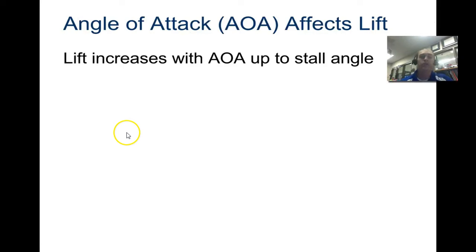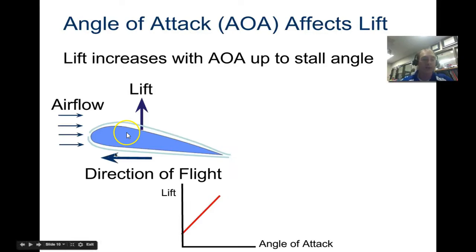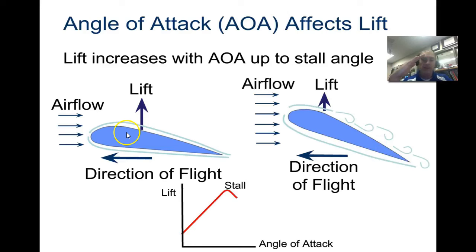Lift will increase with angle of attack up to a certain stall angle. The angle of attack is from the leading edge to the trailing edge with respect to the airflow. We have increased lift as we constantly increase that angle of attack, but there is a critical angle of attack, which is your stall angle. Typically for most small aircraft, that's around 15 degrees.